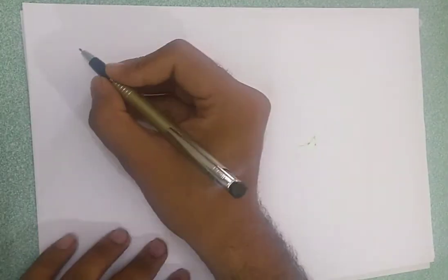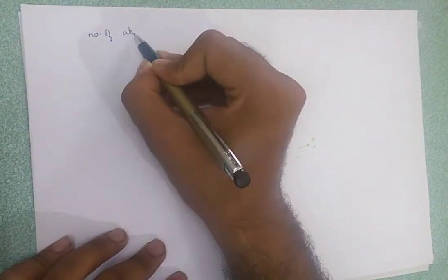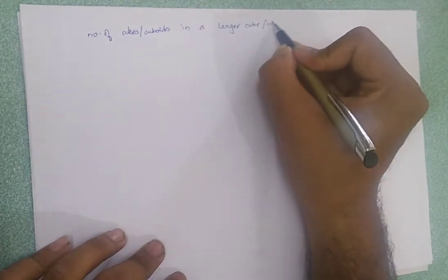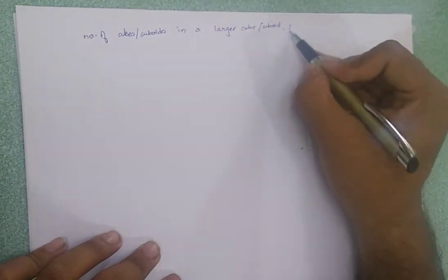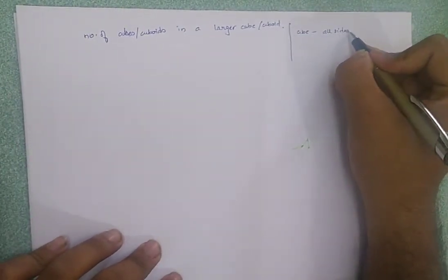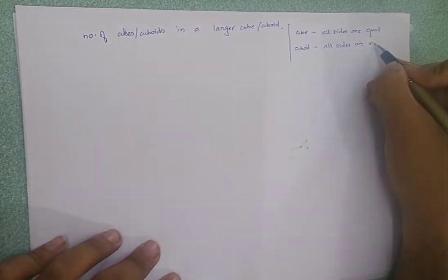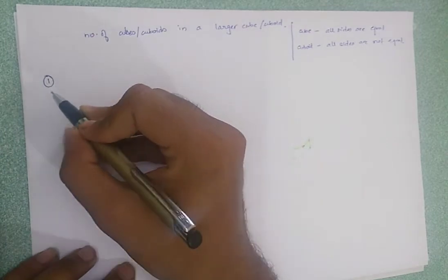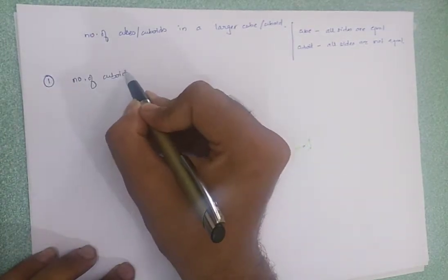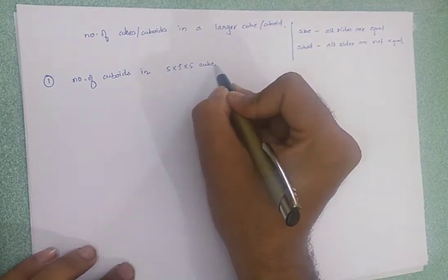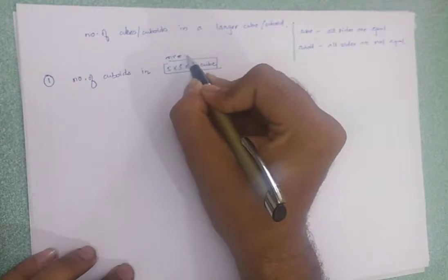In the last video tutorial, we saw how to calculate the number of squares or rectangles in an m×m or m×n grid. Now we will talk about the number of different cubes or cuboids in a larger cube or cuboid. In a cube, all sides are equal, and in a cuboid, all sides are not equal. Let's take the first case where we have to find the number of cuboids in a 5×5×5 cube — this is basically the format of an m×m×m cube.